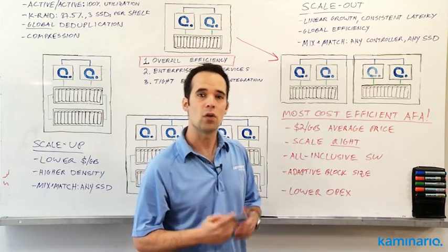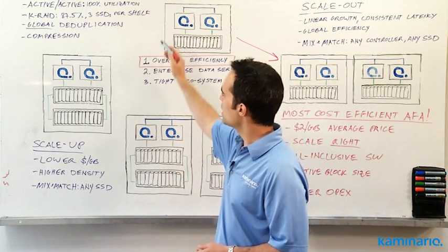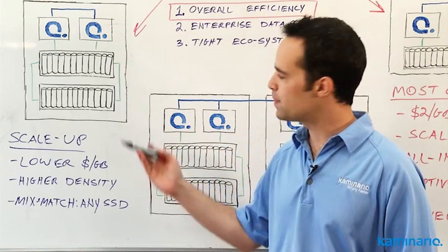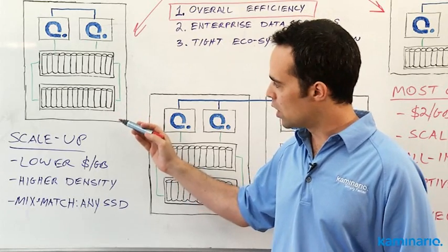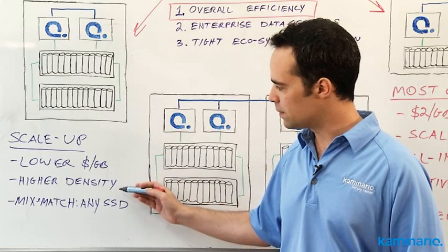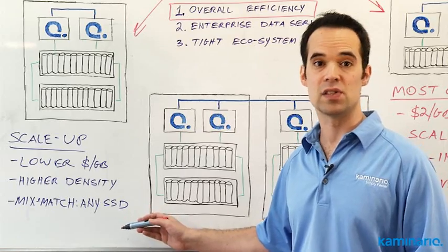Or, if all the customer needs is more capacity, then the Kaminario K2 can scale up. We can simply add an expansion shelf, again, non-disruptively, and we achieve a lower dollar per gigabyte, higher density, and also here we can mix and match to add any size of SSD.